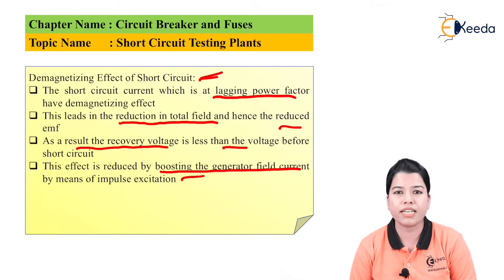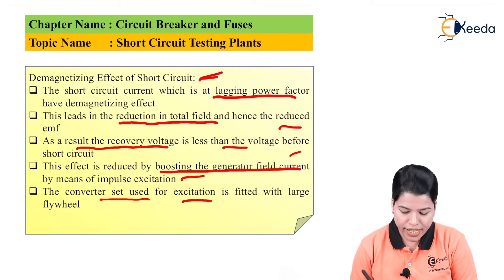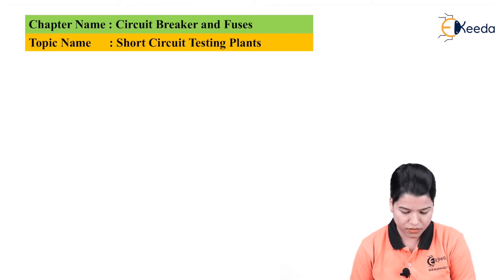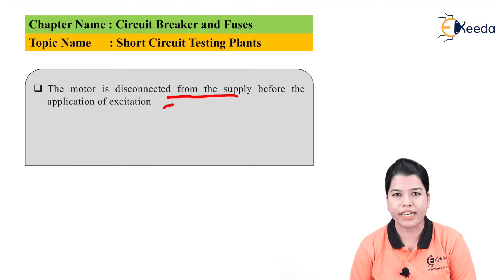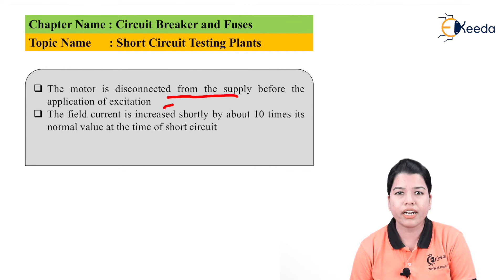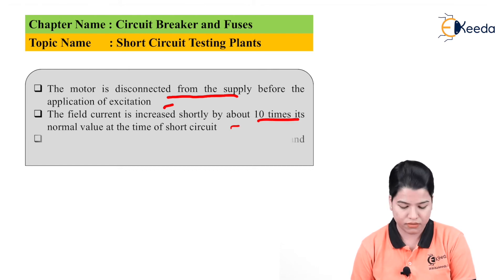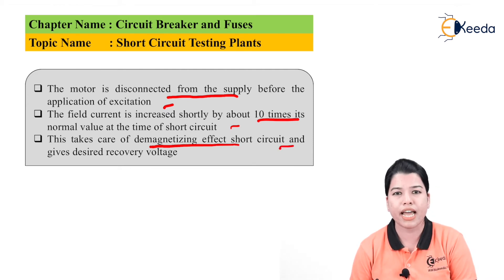The main aim of impulse excitation is to boost the generator field current so that the demagnetizing effect of the short circuit can be reduced. The converter set used for excitation is fitted with a large flywheel. The motor is disconnected from the supply before applying impulse excitation, and the field current is increased by about 10 times its normal value at the time of short circuit, taking care of the demagnetization effect and providing the desired recovery voltage.